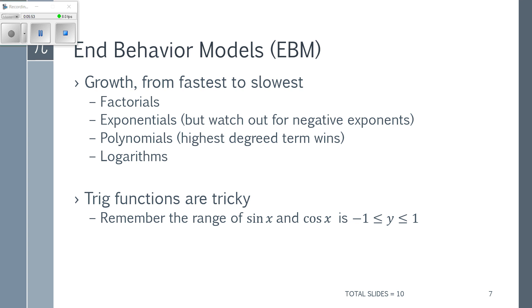This is something we're going to have to practice over and over again — it's not a natural way to think because we're being forced to consider numbers that are too big to really conceive of. A helpful thing to know is the growth rate hierarchy from fastest to slowest. Factorials grow faster than anything else — for example, 4! = 4 × 3 × 2 × 1. Factorials are the fastest growing term, followed by exponentials. However, we have to watch out for negative exponents, because exponentials only grow fast when the exponent is positive; if the exponent is negative, exponentials are slow.